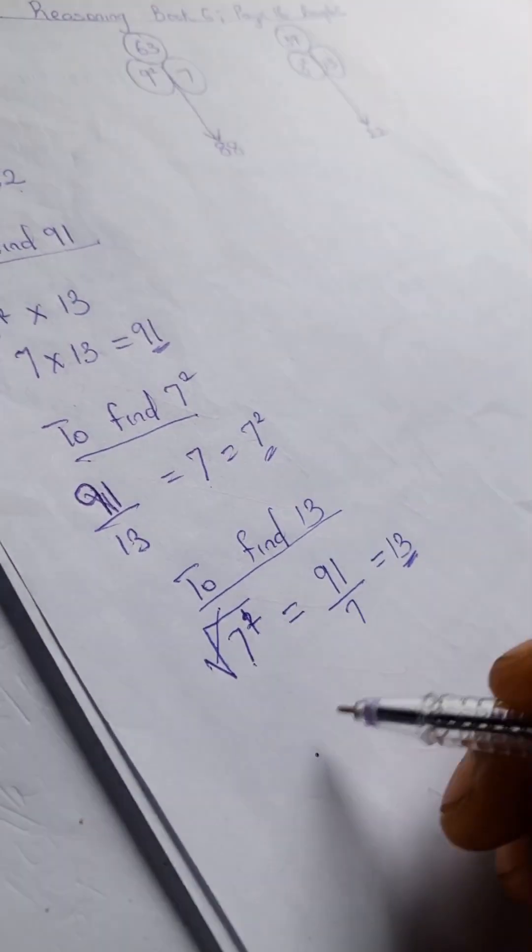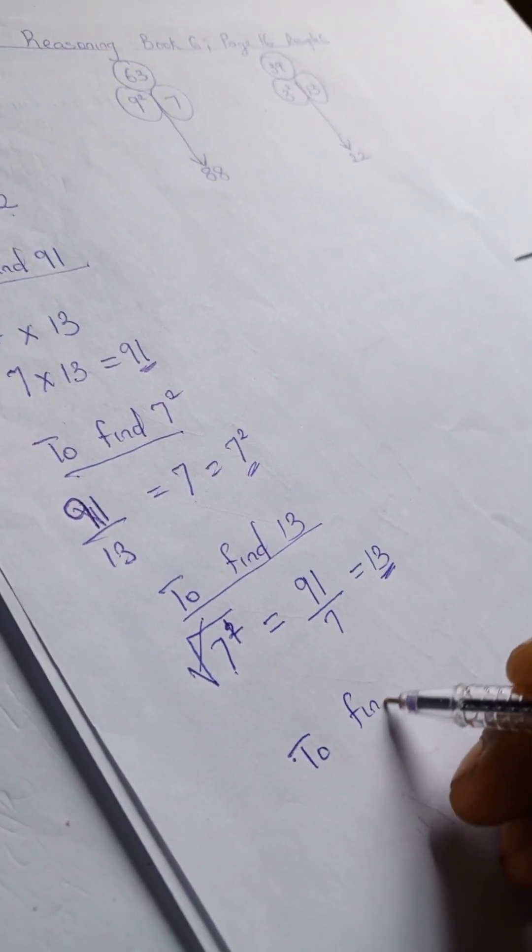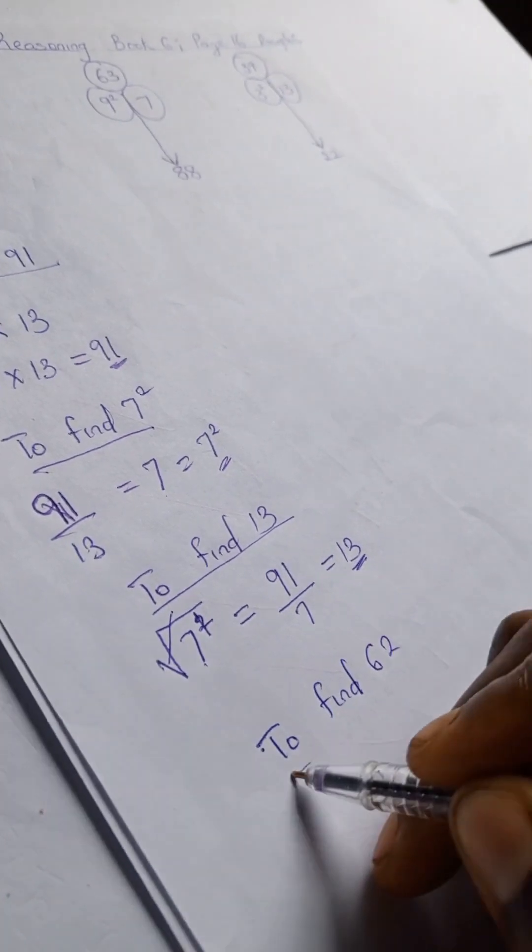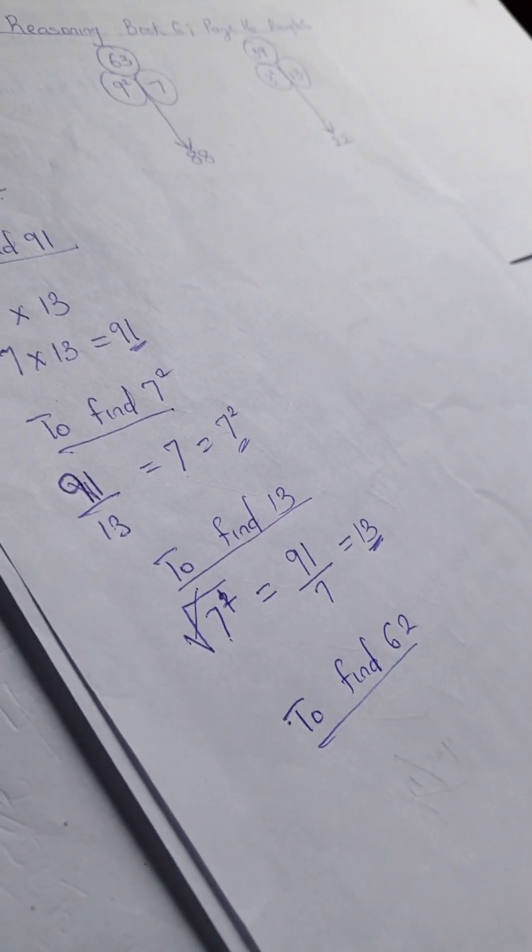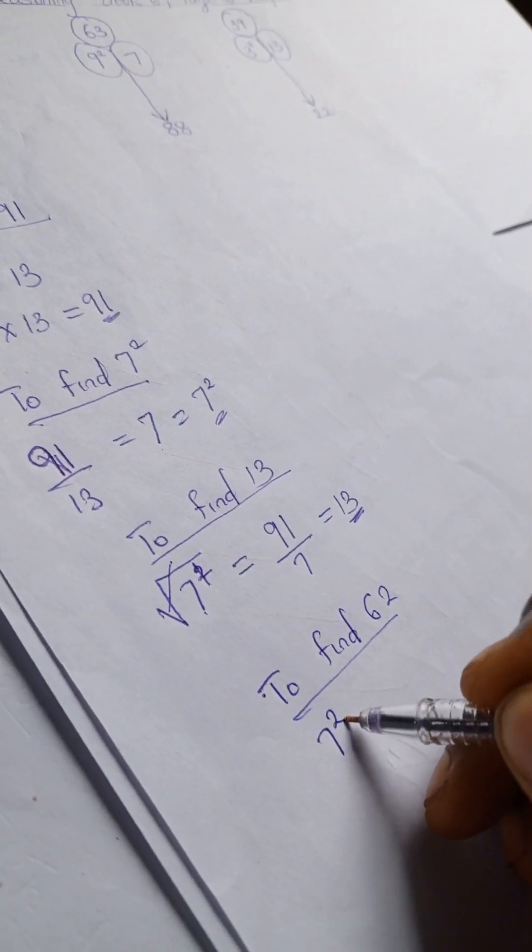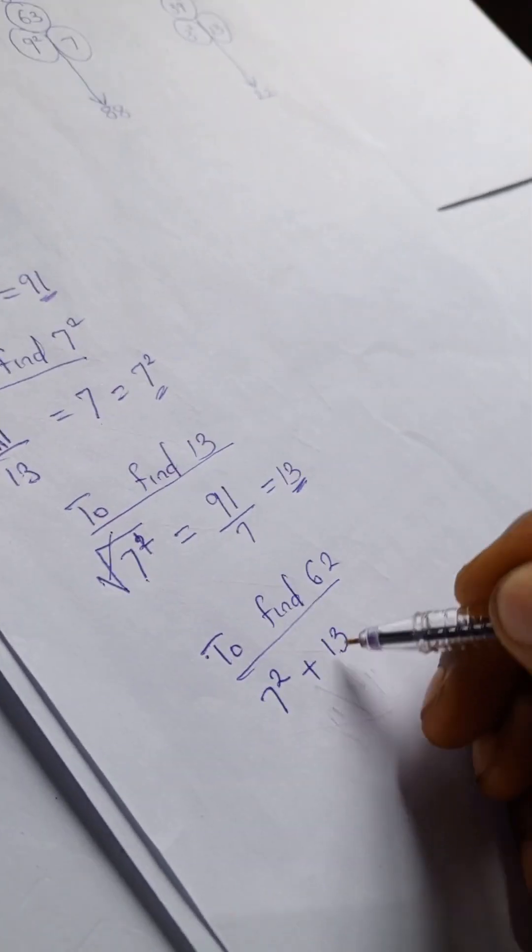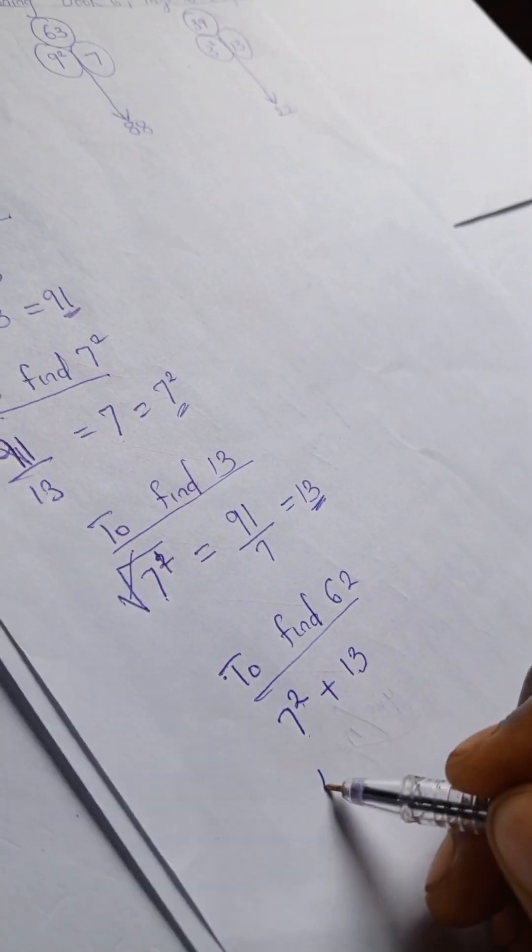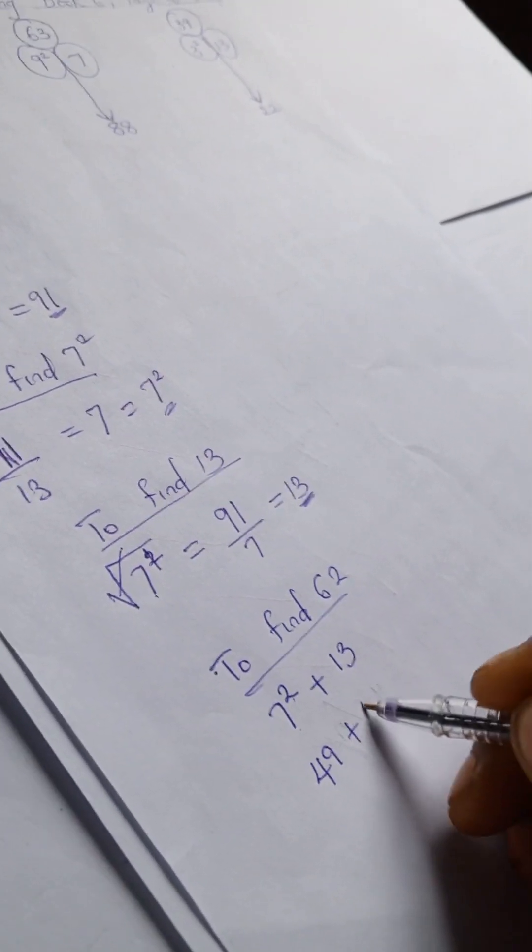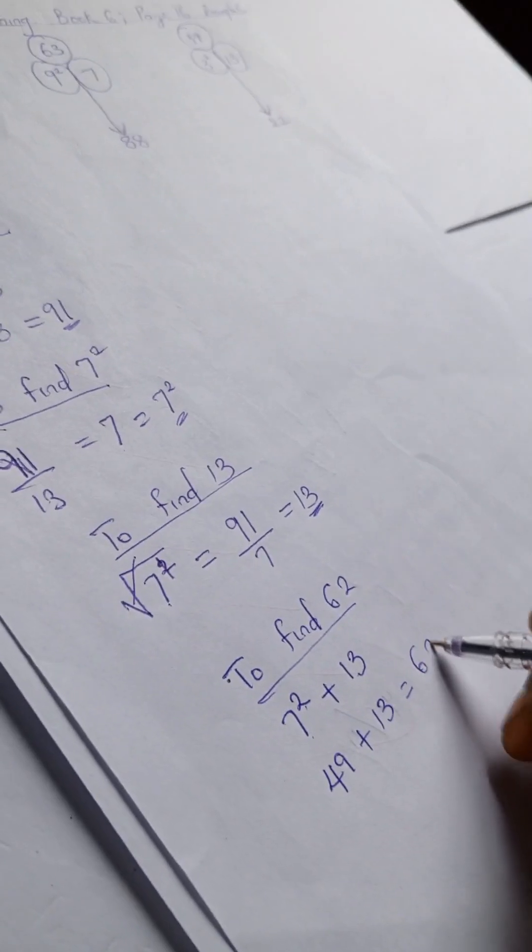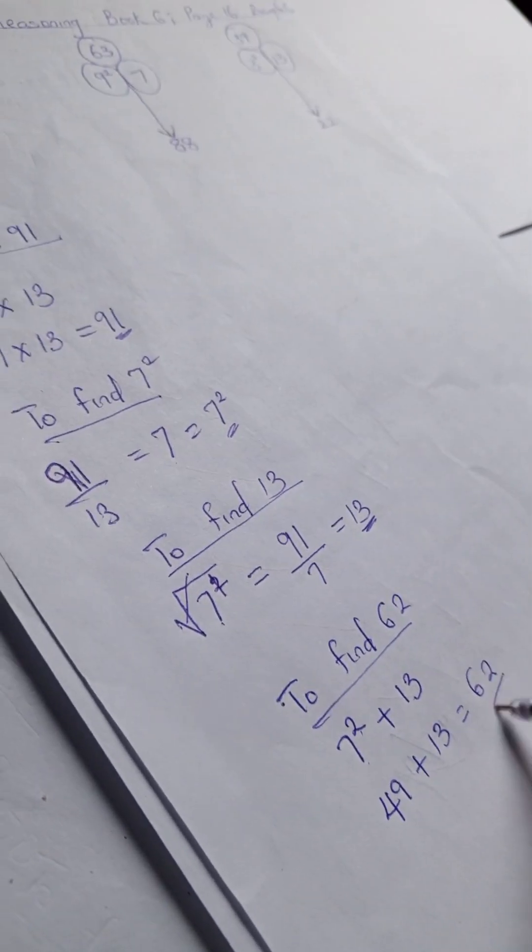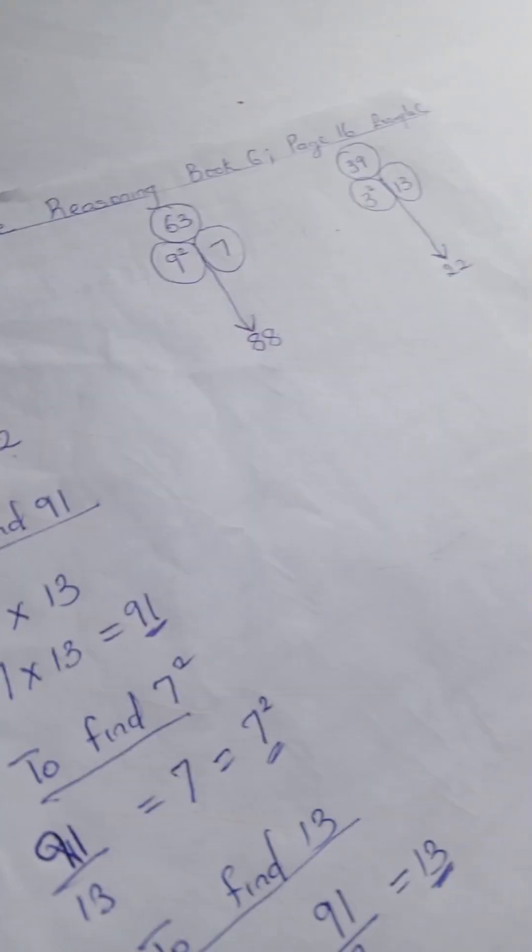So to find 62, we have 7 squared plus 13. So 7 squared here is 49 plus 13, that gives us 62.